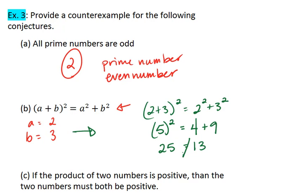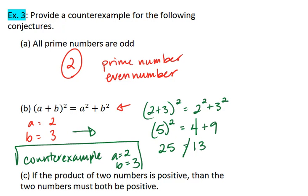We can see that 25 does not equal 13. Our counterexample is a equals 2 and b equals 3 because when we plug those values in, the statement is no longer true.